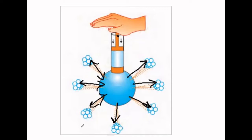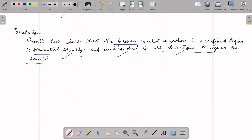Pascal's Law has a very important application — that is the hydraulic machine, which we are going to study next: the principle of the hydraulic machine. There will be an important derivation which comes frequently in exams, and numericals based on this derivation are also very common. Hydraulic machine is basically an application of Pascal's Law — we apply Pascal's Law in real life to do useful work, and we call that machine a hydraulic machine.